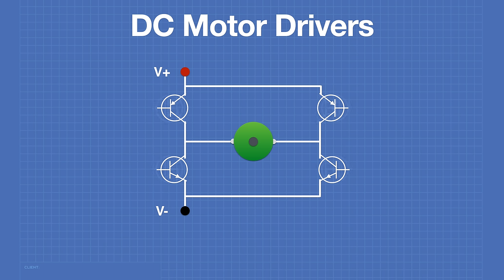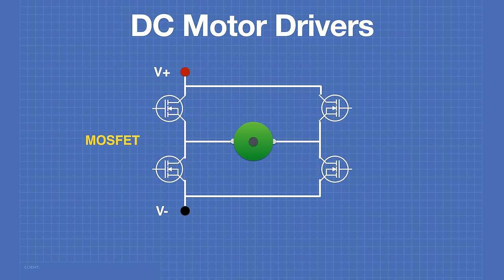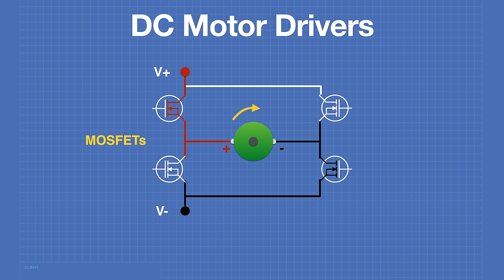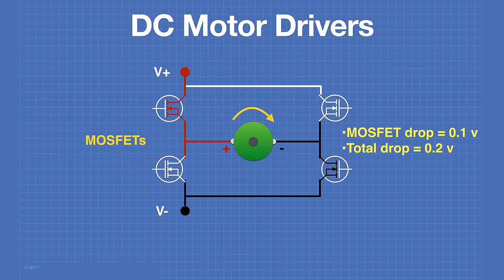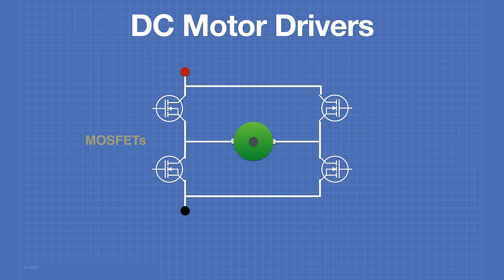A more efficient method of building an H-bridge is to use MOSFETs. By applying a voltage to the gate, they act as switches. Unlike the bipolar transistor, the voltage drop is extremely low — usually 0.1 of a volt or less. This means very little voltage is dissipated through the MOSFETs, and some of these designs don't even require heat sinks.